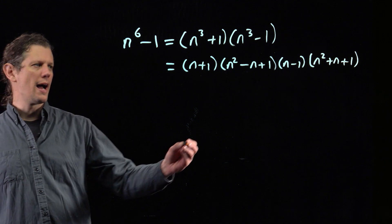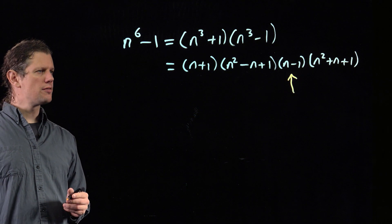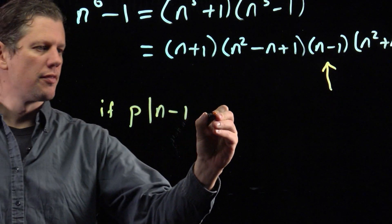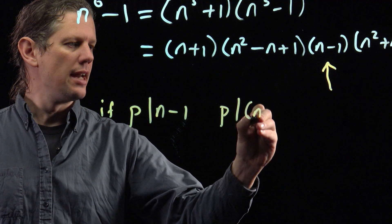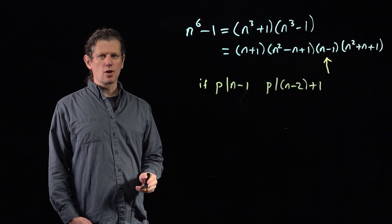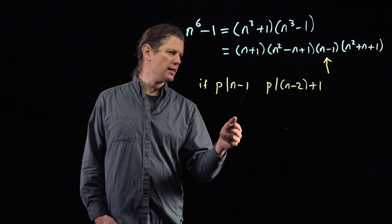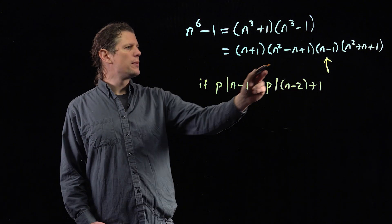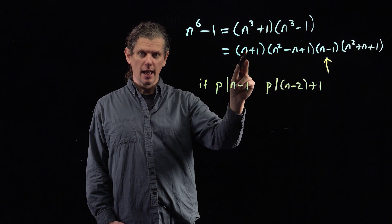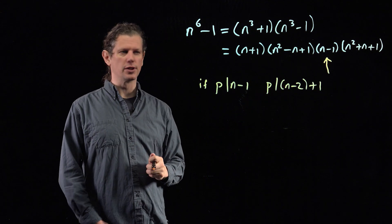Now we ask what happens if p divides (n - 1). If p divides (n - 1), then p divides (n - 2) + 1 because that's the same thing. Again, this gives a contradiction of minimality. If we assume n is the smallest n greater than 1 for which p divides n⁶ - 1 via this factor, then p would have divided this factor for n - 2 already. This is one of the cases where dealing with the small cases earlier was useful.